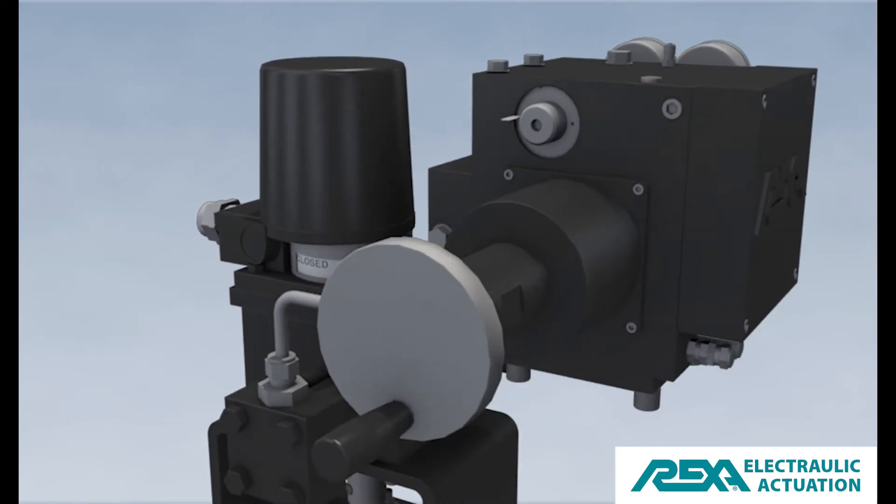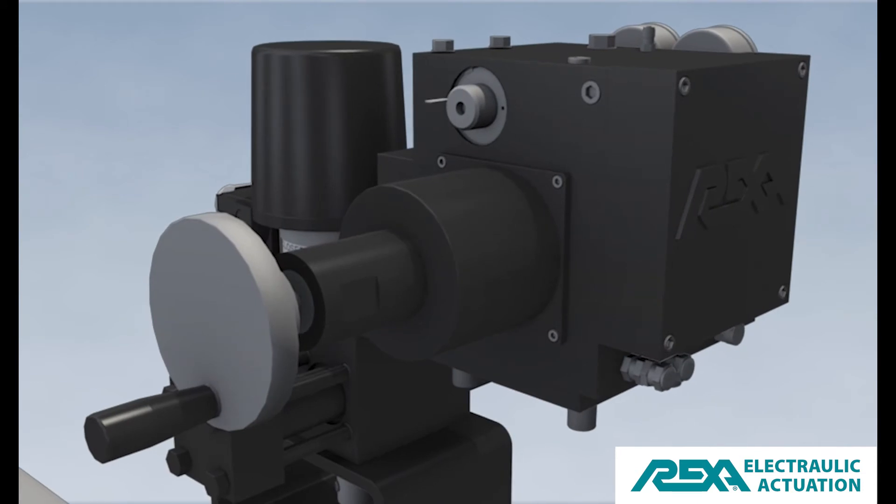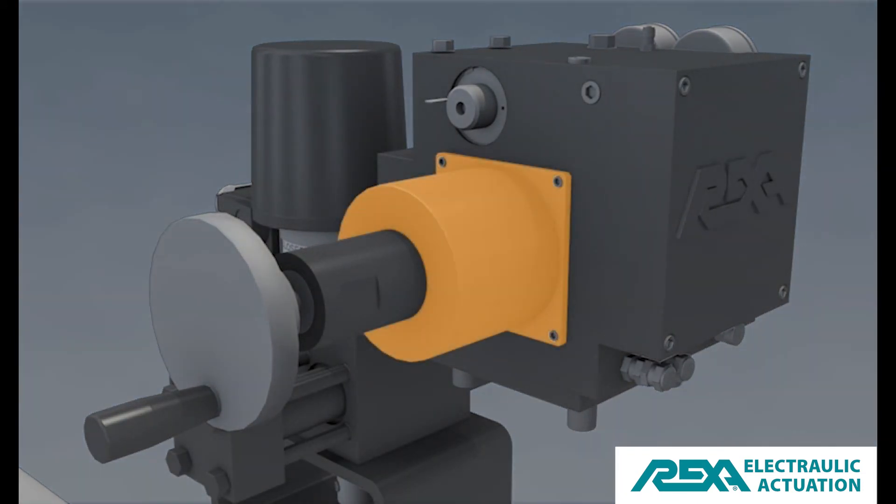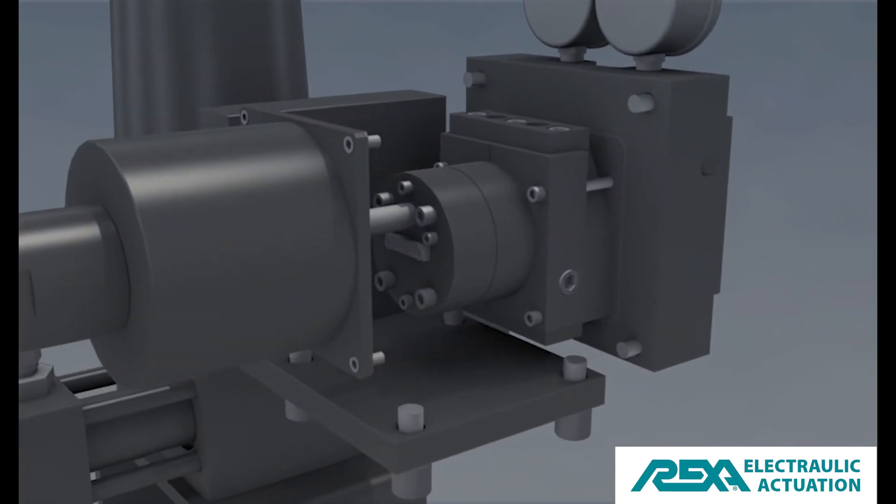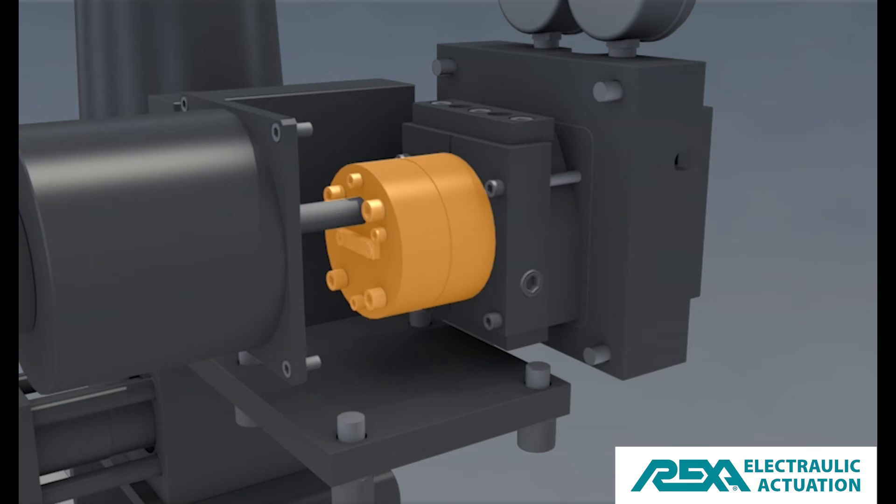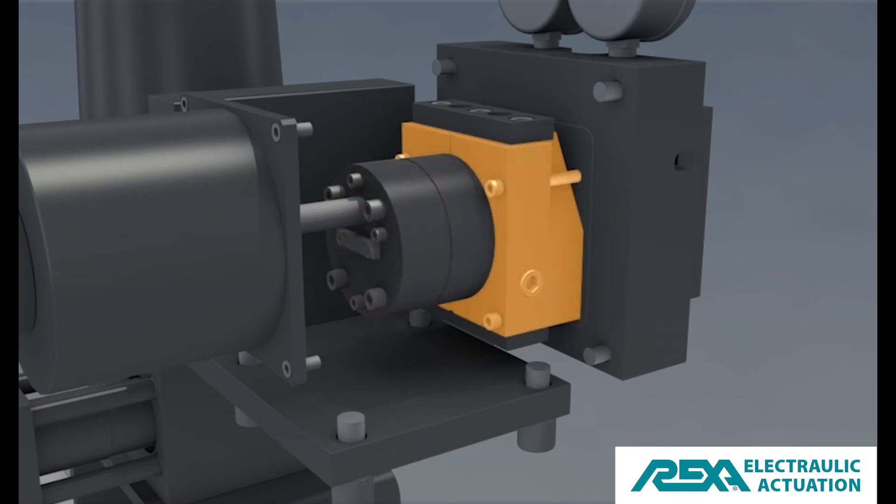The power module is the main component of the actuator. It contains the motor, gear type hydraulic pump, and the flow match valve assembly.